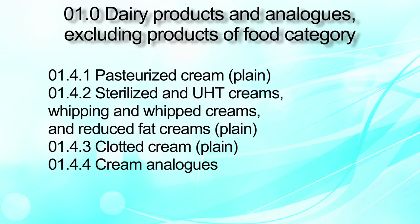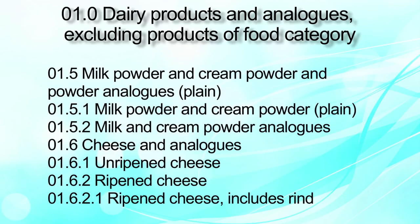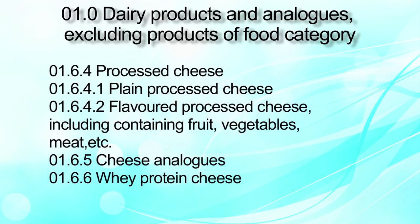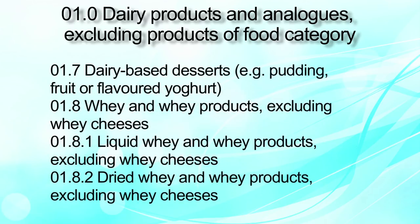You can see the detailed presentation in the slide. The categorization also describes milk powder and cream powder plain, milk and cream powder analog, cheese analog, unripened cheese, ripened cheese, rind of ripened cheese, cheese powder and whey cheese. It also includes processed cheese plain, flavored processed cheese including those containing fruits, vegetables and meats, cheese analog, whey protein cheese, dairy-based desserts, whey and whey products excluding whey cheese — both liquid and dried forms. These are all part of dairy products and its analog.